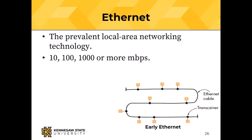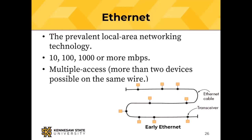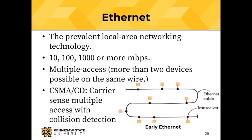Ethernet speeds include 10 megabits, 100 megabits, and 1,000 megabits — gigabit Ethernet is now common. Multiple access means two or more devices can listen to the same wire. Carrier sense with collision detection: carrier sense means a transceiver can listen to the wire and determine whether it's busy; collision detection means transceivers can tell whether their message was overridden by another transmitting device.